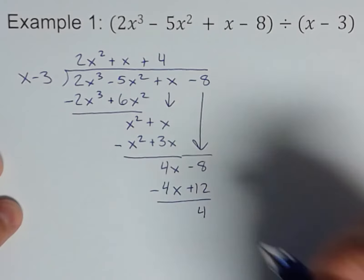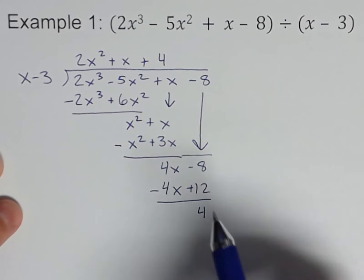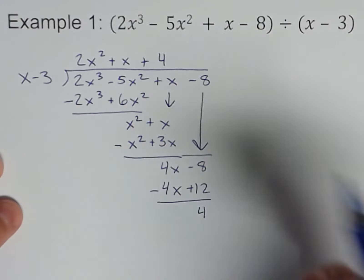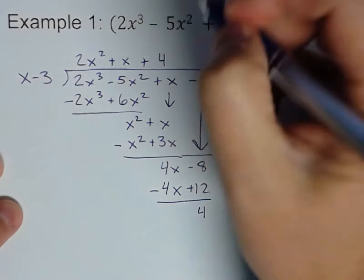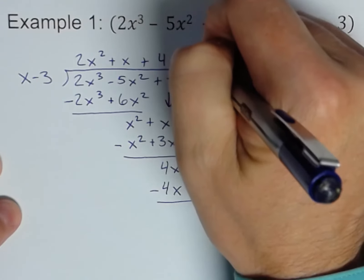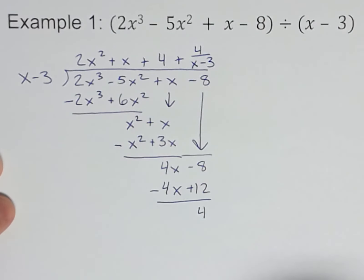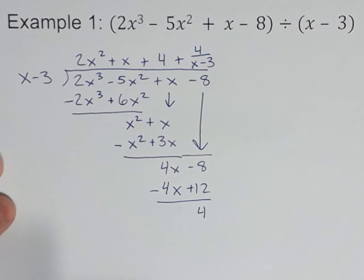And subtract. Remember, change those signs. 4x - 4x is 0. -8 + 12 is 4. Now we can't go any farther; x won't go into 4, so 4 is our remainder. And we're going to write it like this though, because we're in a college algebra class and we're fancy: we're going to write plus 4 over x - 3. And there is the solution. That's long division of polynomials.